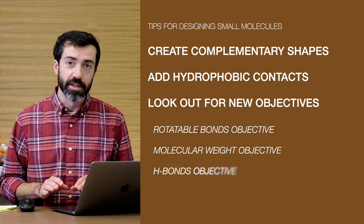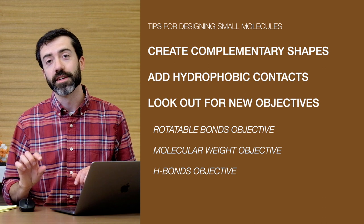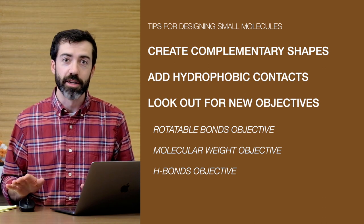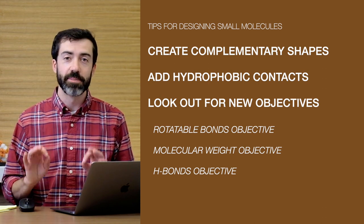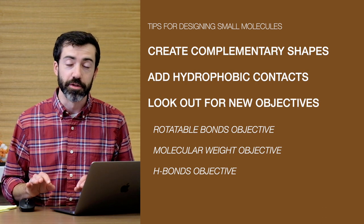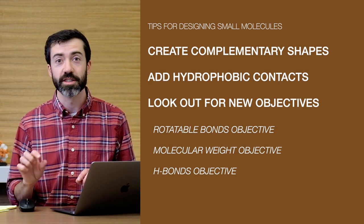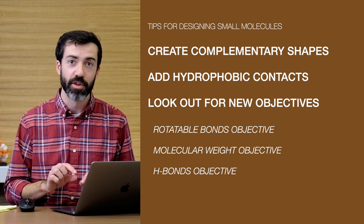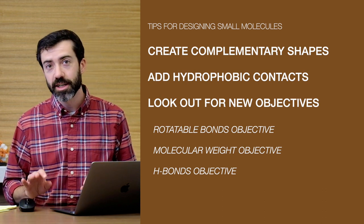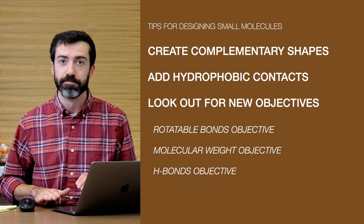Another thing to consider is the number of atoms that can serve as hydrogen bond donors. Too many polar atoms, and especially hydrogen bond donors, will make it difficult for our small molecule to cross the cell membrane, which is super hydrophobic. We generally want to keep the number of hydrogen bond donors to a minimum.